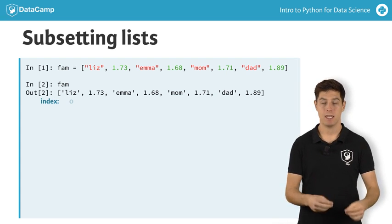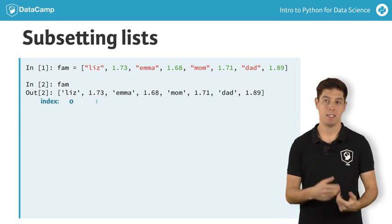The first element in the list has index 0, the second element has index 1, and so on.